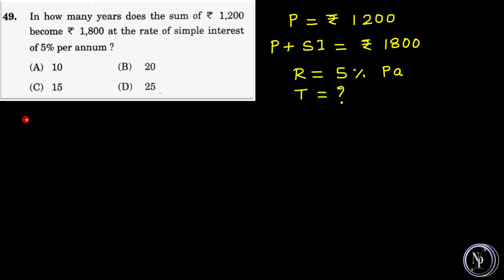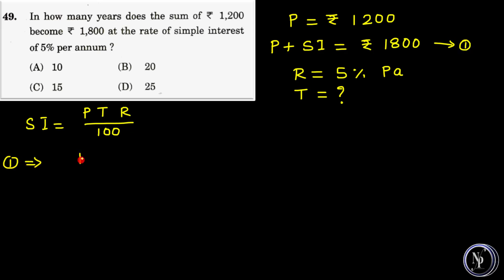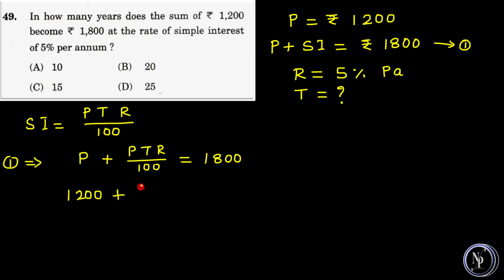The formula for simple interest is SI is equal to PTR by 100. Substituting into the equation P plus SI equals Rs.1800, equation number 1 becomes: P plus PTR by 100 is equal to Rs.1800. Now substituting the values: 1200 plus 1200 into 5 into T divided by 100 is equal to 1800.